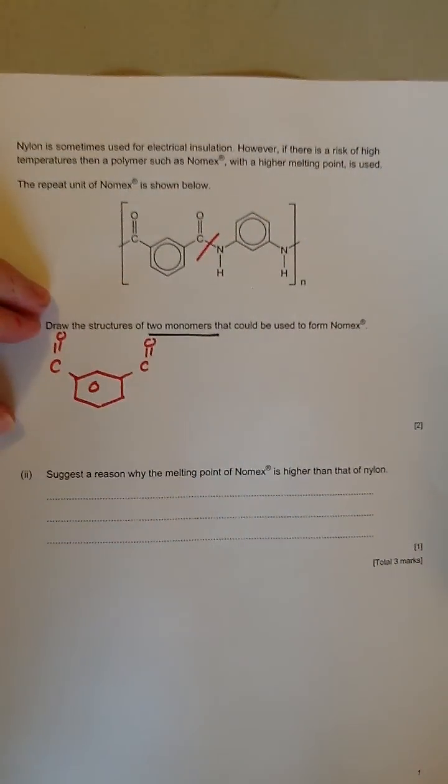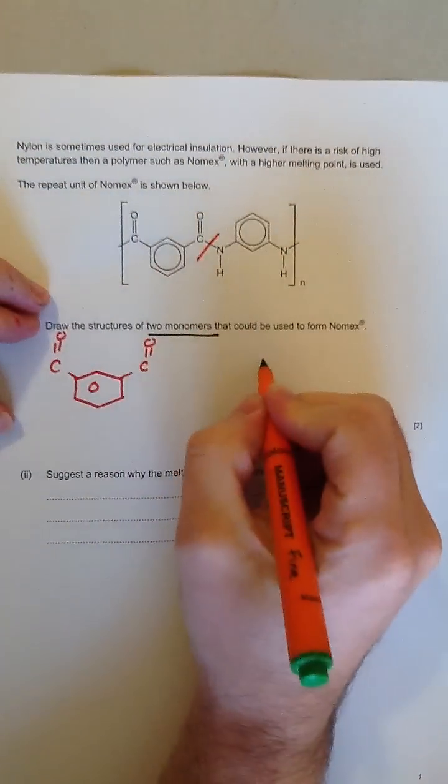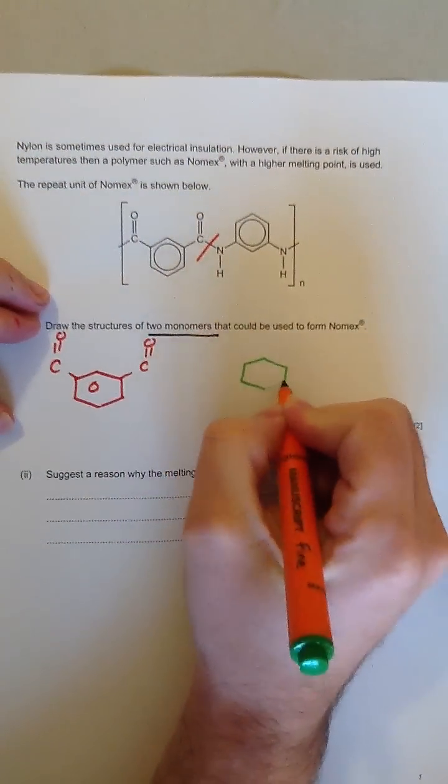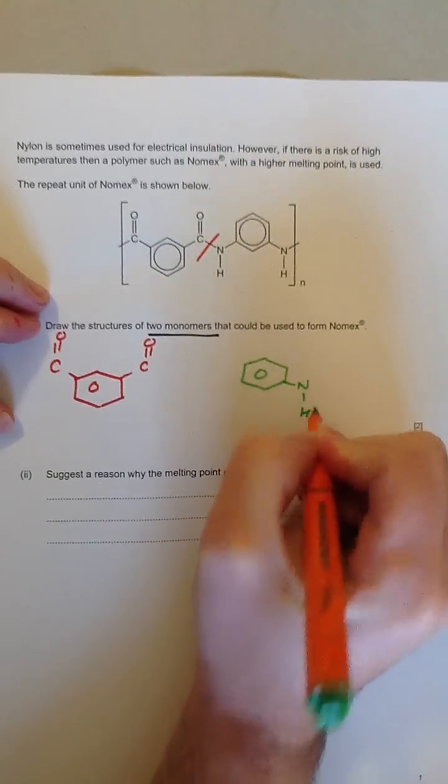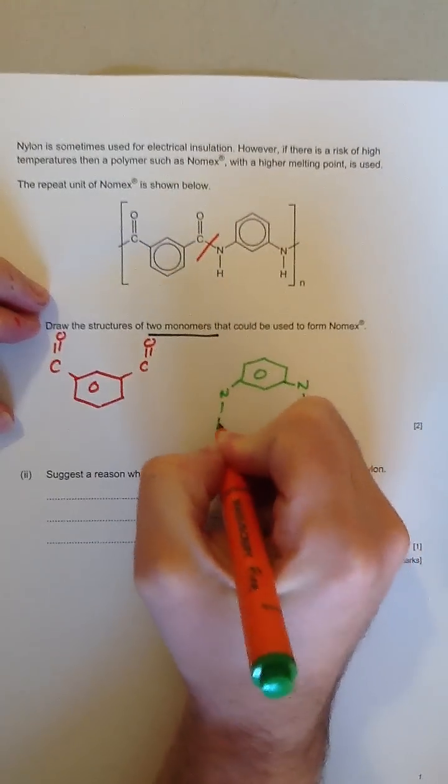And on the other side, this part of the molecule, we're left with a benzene ring, we're left with an NH and an NH.